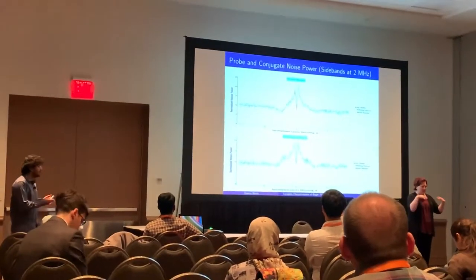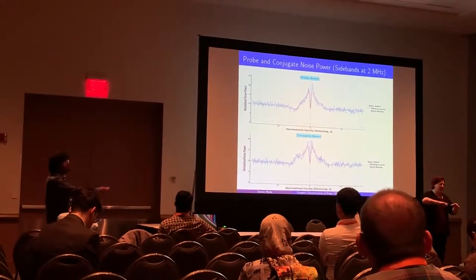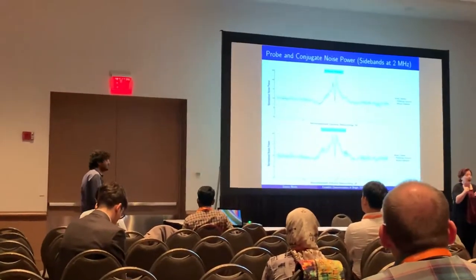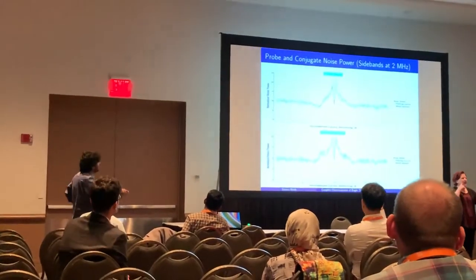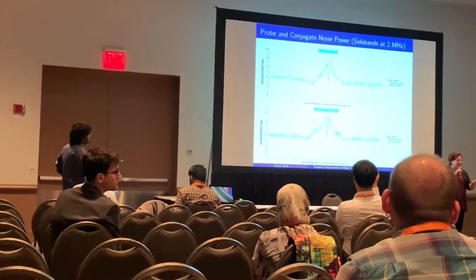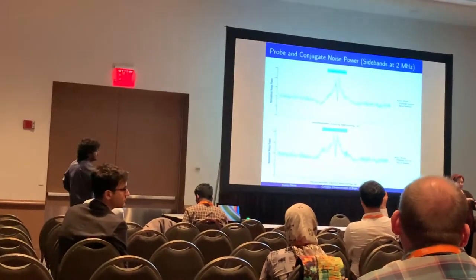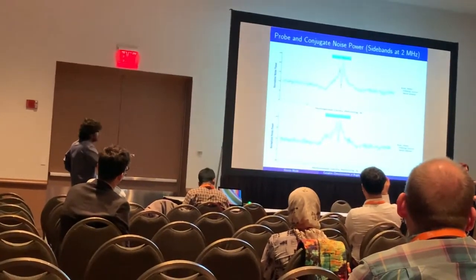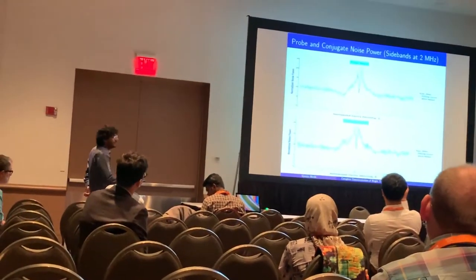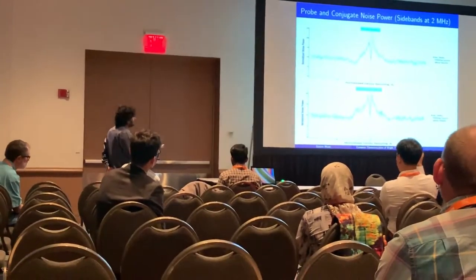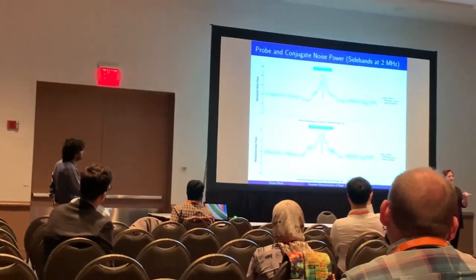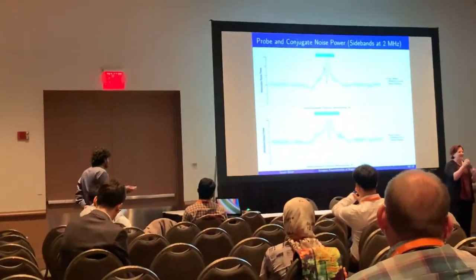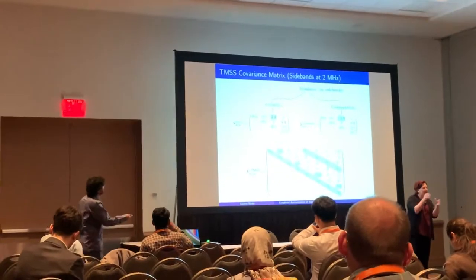Recalling the expected cavity response, if there is a sideband imbalance you would see different noise levels at the upper and lower sidebands. In this experimental data, I am scanning my probe cavity and looking at the reflected noise power. You can clearly see that as the carrier is resonant, the left side is different from the right side — the two sidebands indeed have different noise features. There is an imbalance. Similarly, for the conjugate beam, there is also an imbalance, though less obvious. We fit the experimental data with the cavity tuning functions in order to extract the covariance matrix for each beam individually.